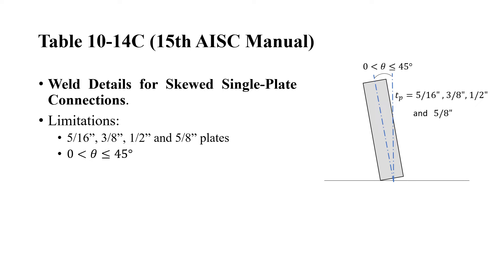It is also important to mention the table 10-14C from the 15th edition of the AISC manual. It provides weld details for skewed single-plate connections. However, it's limited to the range between 5/16 and 5/8 inch plates, and also to skew angles between 0 and 45 degrees.